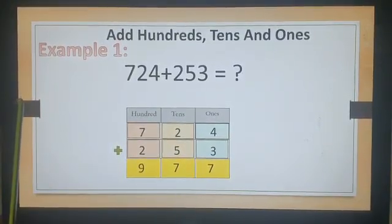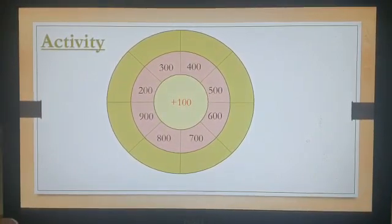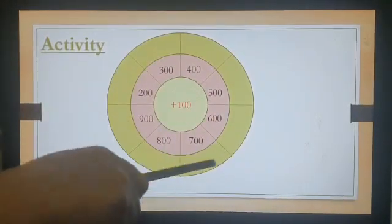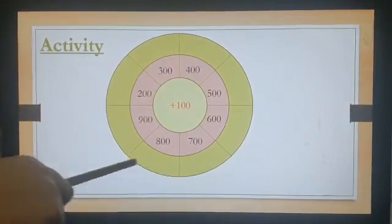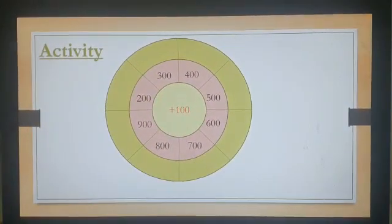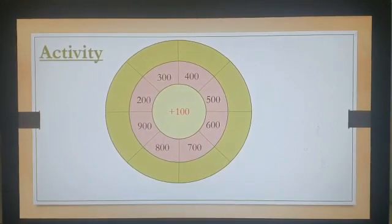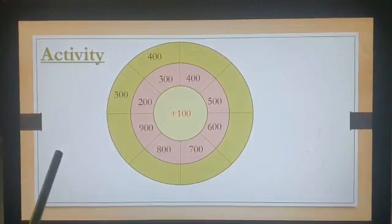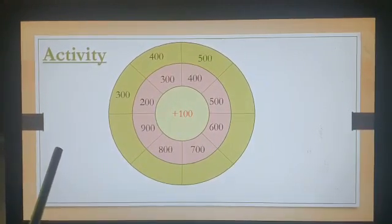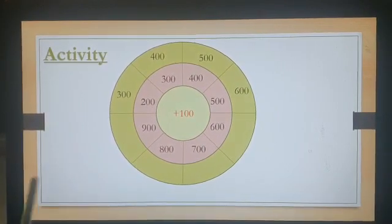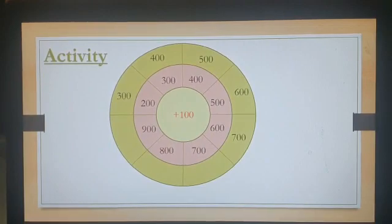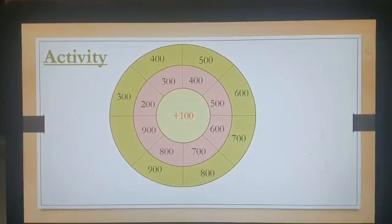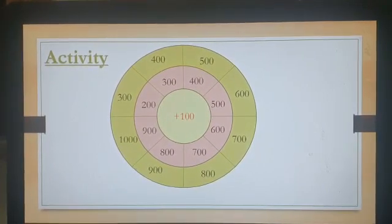Let's do an activity with me. Yes, this is a plus 100 activity. You and me will do it together. Now count with me quickly. 100 plus 200, 300. 100 plus 300, 400. 100 plus 400, 500. 100 plus 500, 600. 100 plus 600, 700. 100 plus 700, 800. 100 plus 800, 900. 100 plus 900, 1000. Yes.